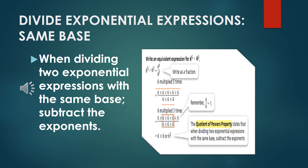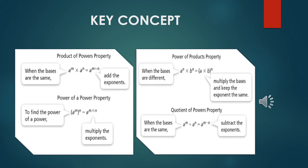If we need to solve the division of exponential expressions with the same base but different exponents, we just need to copy the base and subtract the exponents. In this example, we have 6 to the power of 5 divided by 6 to the power of 3. We copy the 6 and subtract the exponents: 5 minus 3, so the answer is 6 to the power of 2.